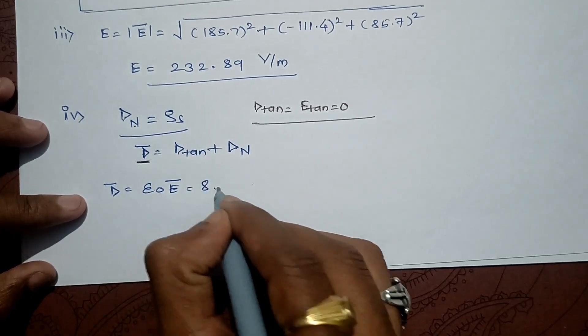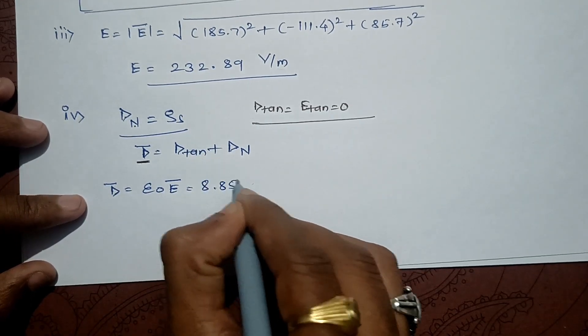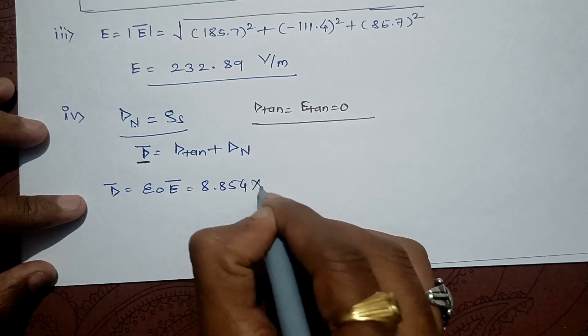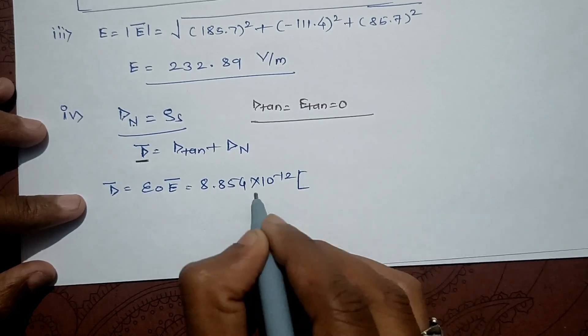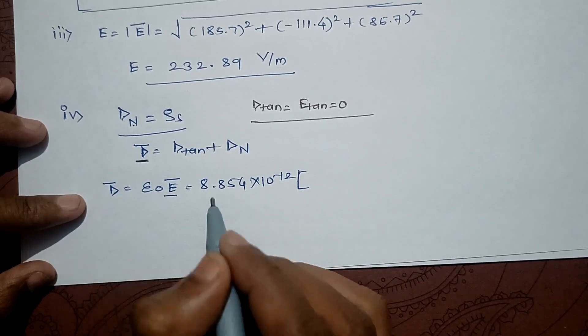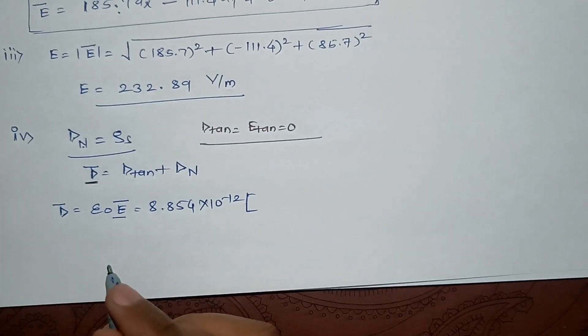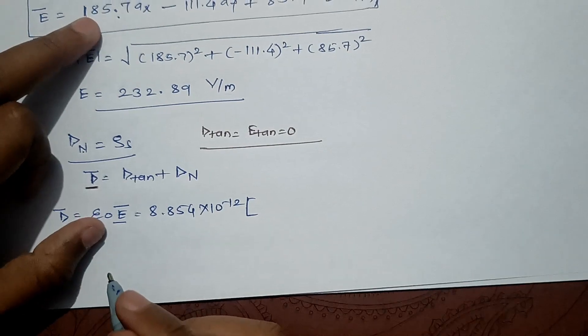We use the relation D⃗ = ε₀·E⃗, where ε₀ = 8.854 × 10^(-12) F/m, multiplied by E⃗ which we have already calculated.